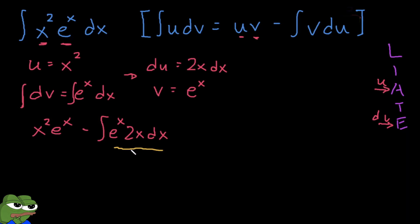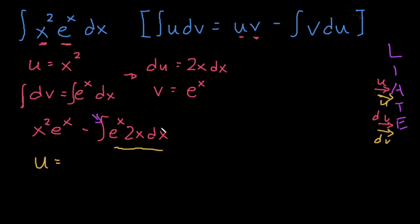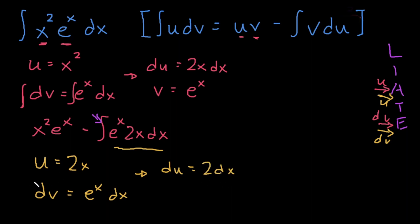We've run into a problem — we need to do integration by parts again on the remaining integral. Looking at LIATE, we still have an algebraic and an exponential. So our new u is 2x and our new dv is eˣ dx. Differentiating gives du equals 2 dx, and integrating gives v equals eˣ.